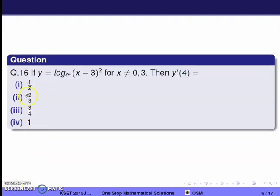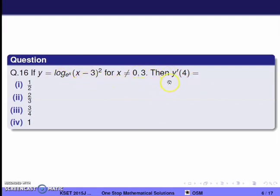Next question, question 16. If y = log base e of x·(x−3)^2, for x ≠ 0, 3, then y'(4) equals. We need to find the derivative value at x = 4.